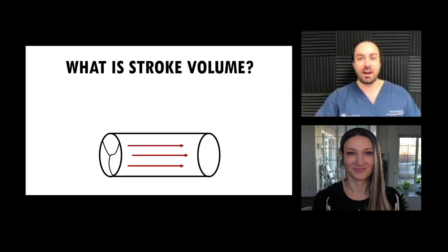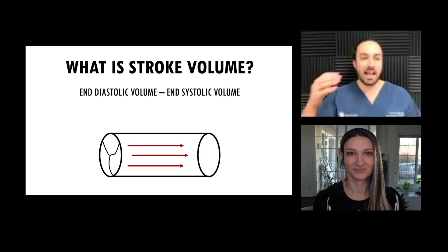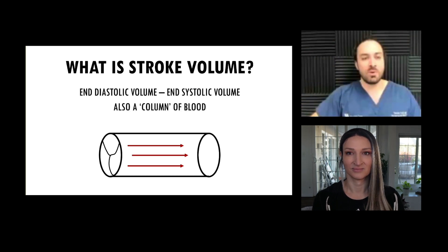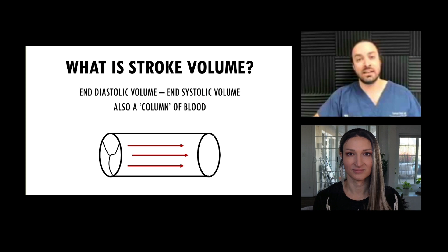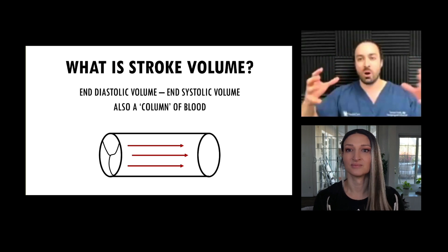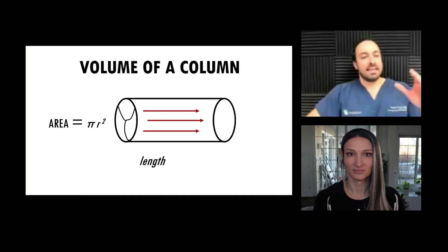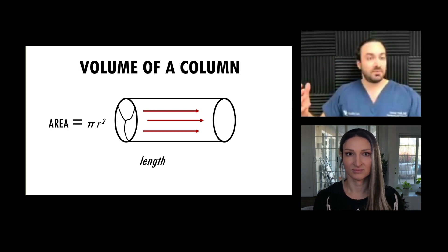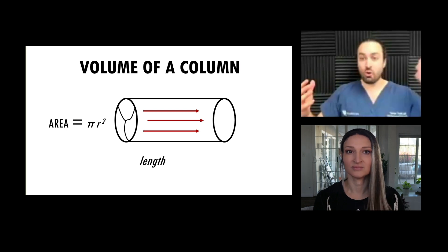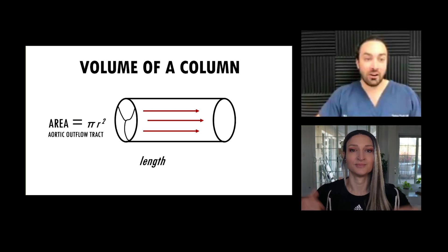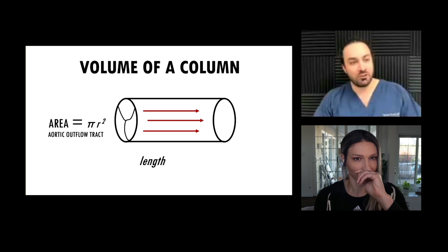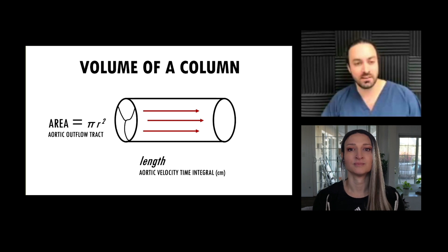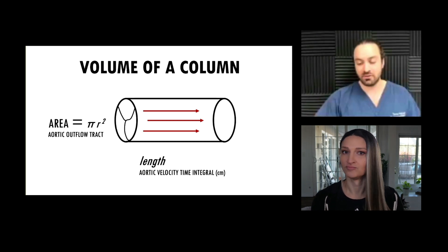Let's get even more granular. What is stroke volume? It's your end diastolic volume versus your end systolic volume. And the way we think about it when it comes to ultrasound and calculating is that we think about it as a column — like geometry — a column of blood. The volume of a column has a calculation: it's your area of the circle portion times the length. Your area is going to be represented by your aortic outflow track, and the length is your aortic velocity time integral, which we have units for. Makes sense.